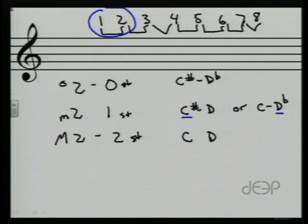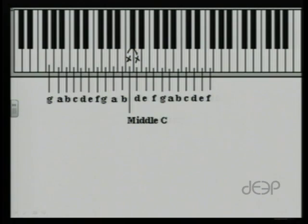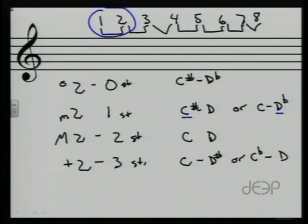Let's give an example of each. The distance from C to D would be a major second. If we go to our piano keyboard, we can see C and D are one, two half steps. A minor second might be C sharp to D or C to D flat - think of minor as being a little bit smaller than major. A diminished second like C sharp to D flat would be zero semitones. An augmented second is three semitones, like C to D sharp or C flat to D.